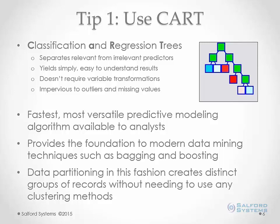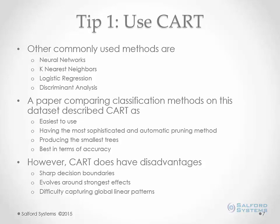CART is good for both continuous and categorical target variables. Other methods that could be used here include neural nets, k-nearest neighbors, logistic regression, and discriminant analysis. A paper comparing all these methods on this exact data set described CART as extremely easy to use, having a sophisticated and automatic pruning method. Almost everything in CART is done automatically — a huge advantage. CART produces smaller trees and seemed to be the best in terms of accuracy on this data set and others in the repository.